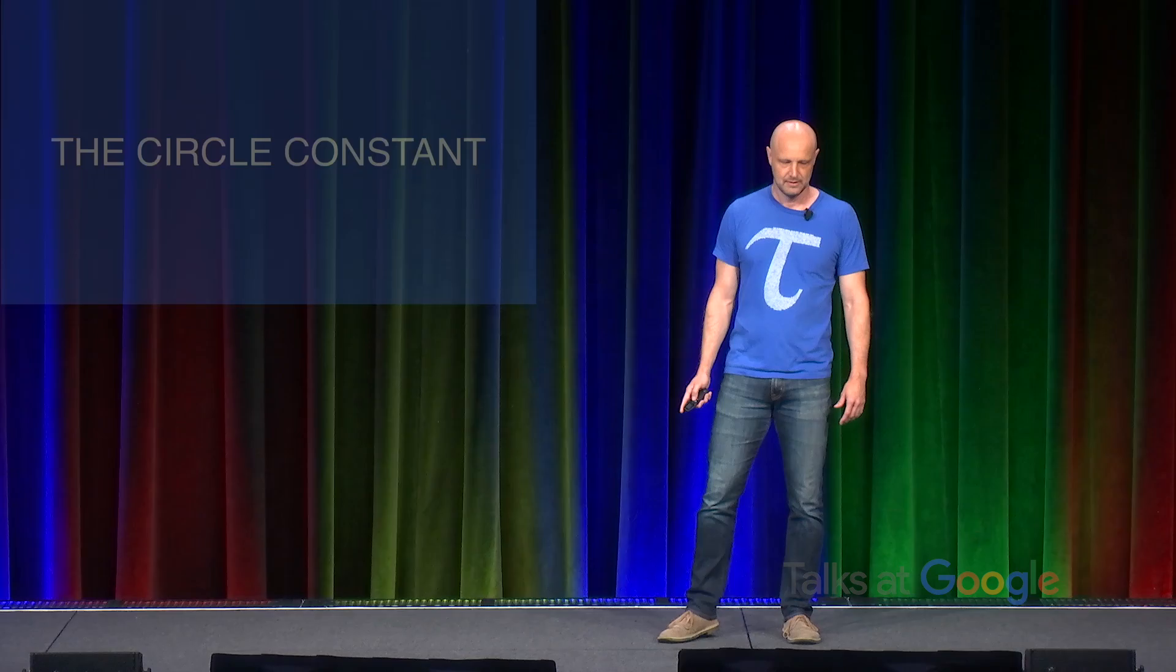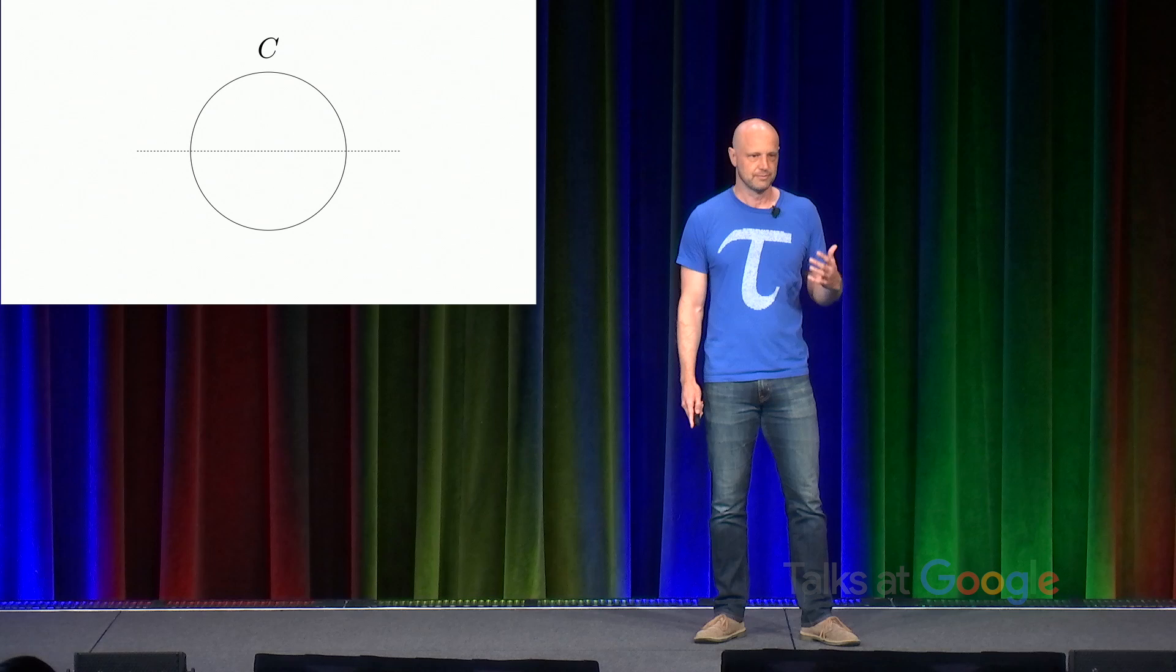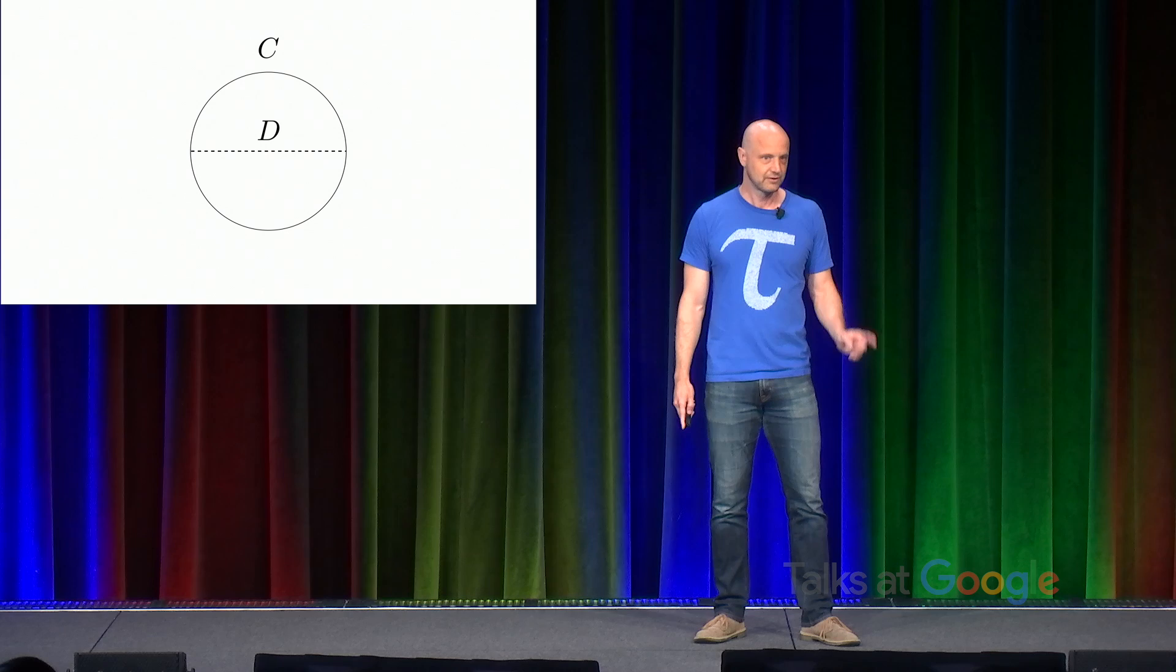Today's talk is about the circle constant. That is to say, the number that relates the circumference of a circle to its linear dimension. Now, I'm being intentionally ambiguous there when I say linear dimension, because the traditional choice for that dimension is the diameter. But that's not the only choice, as we'll see.